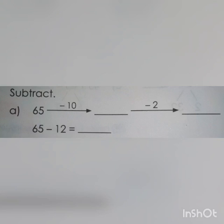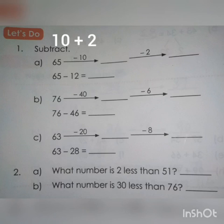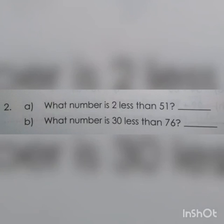Look at the next problem: 65 minus 12. How can you separate 12? 10 plus 2. Now subtract 10 from 65. 65 minus 10 is 55. From 55 subtract the remaining value 2, so 55 minus 2 is equal to 53. Therefore we will get the answer as 65 minus 12 equal to 53.